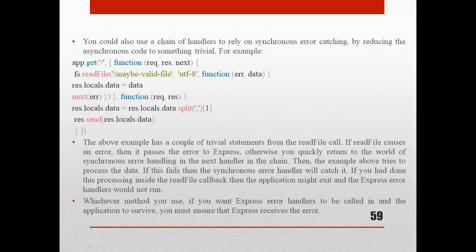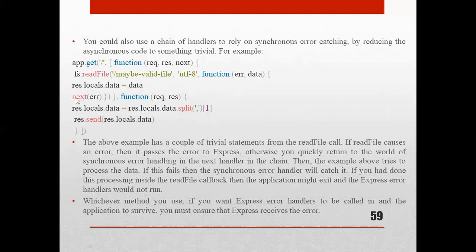We could also use a chain of handlers to rely on synchronous error catching by reducing asynchronous code. See the example: app.get with parameters request, response, and next. Inside, use fs.readFile with a valid file path, encoding utf8, and a callback function with error and data. If successful, set response.locals.data to data; if there is an error, pass it using next(error).